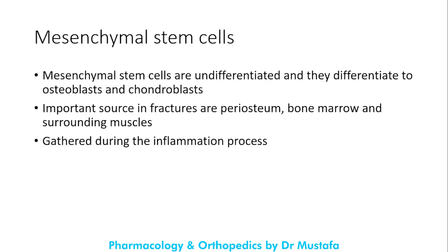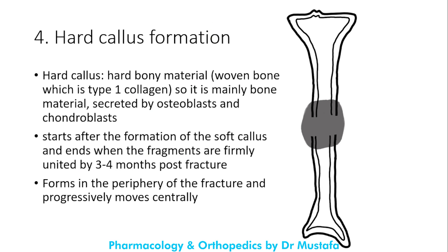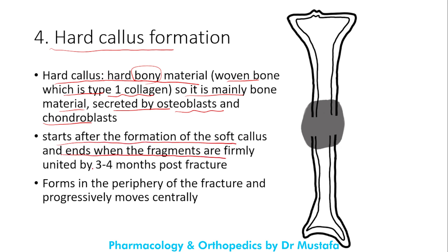Mesenchymal stem cells are undifferentiated stem cells that differentiate into osteoblasts and chondroblasts. Chondroblasts secrete cartilage and osteoblasts secrete bone. An important source in fracture healing is the periosteum, the bone marrow, and the surrounding muscles. These cells are gathered during the inflammation process. Hard callus formation occurs after the soft callus: it is hard bone material, mainly woven bone which is type 1 collagen, secreted by osteoblasts and chondroblasts.